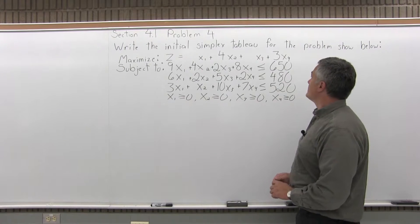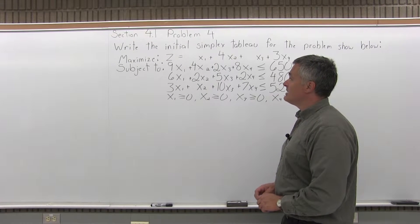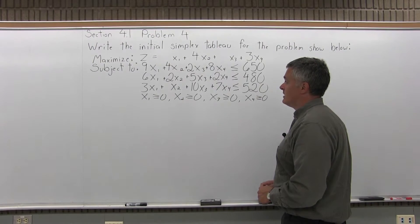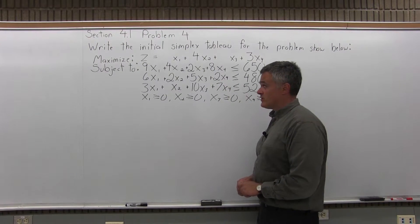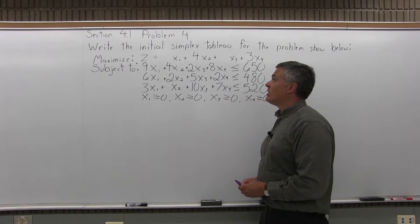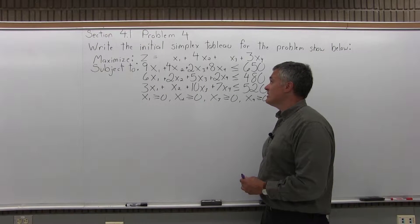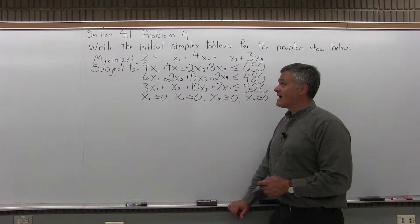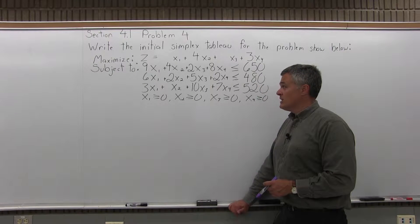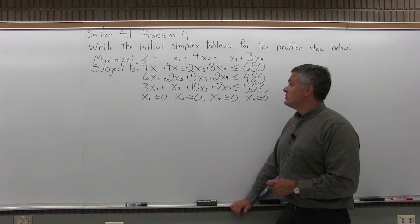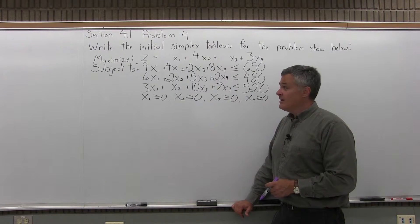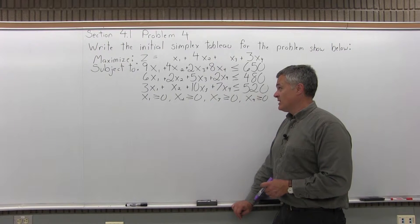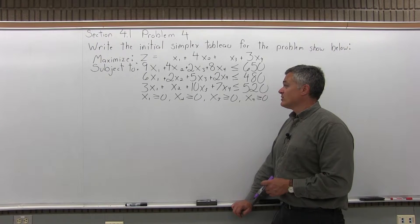It says write the initial simplex tableau for the problem shown below. The problem is: maximize z equals x1 plus 4x2 plus x3 plus 3x4, subject to the constraints: 9x1 plus 4x2 plus 2x3 plus 8x4 is less than or equal to 650; 6x1 plus 2x2 plus 5x3 plus 2x4 is less than or equal to 480; and 3x1 plus x2 plus 10x3 plus 7x4 is less than or equal to 520.